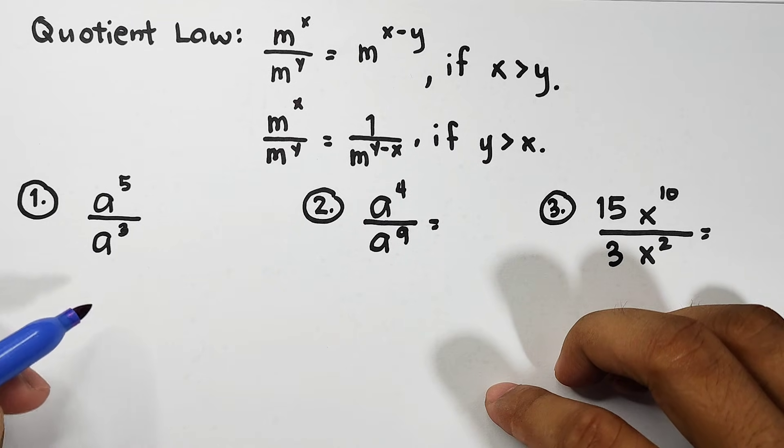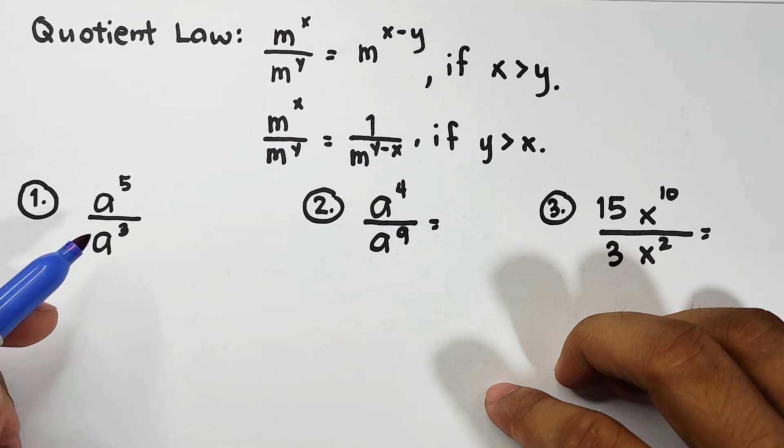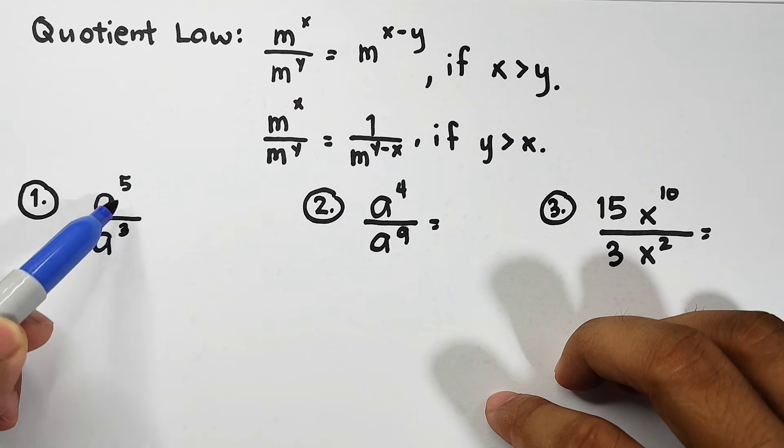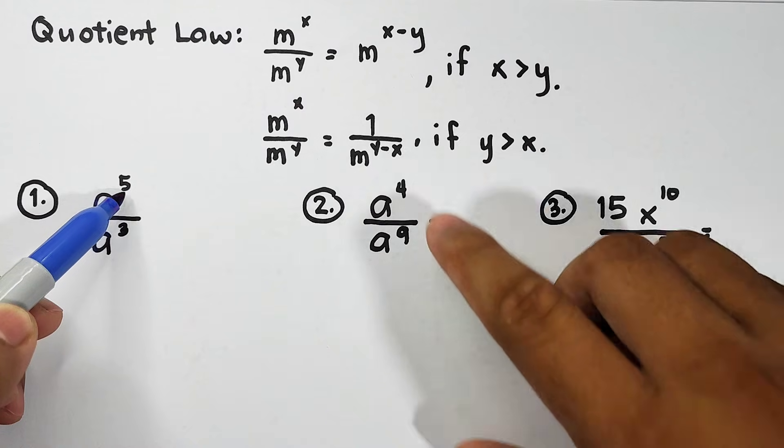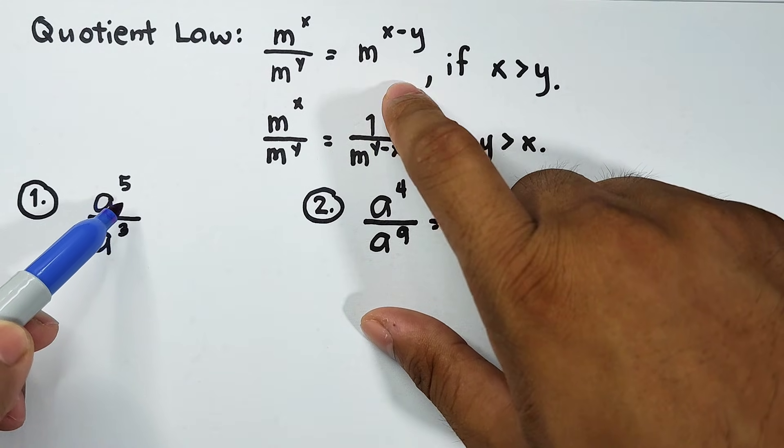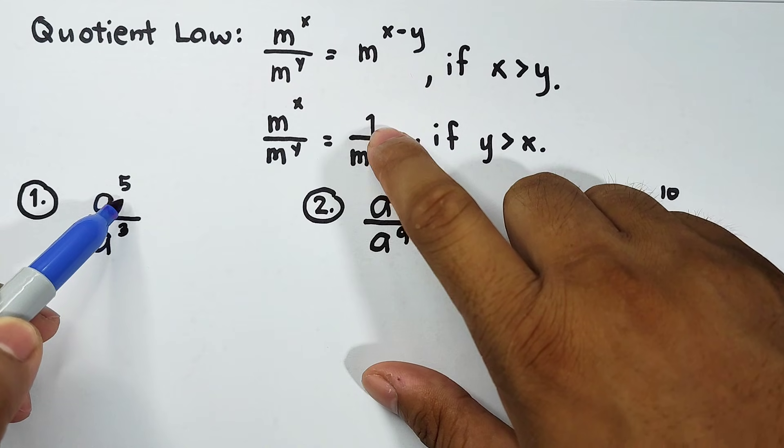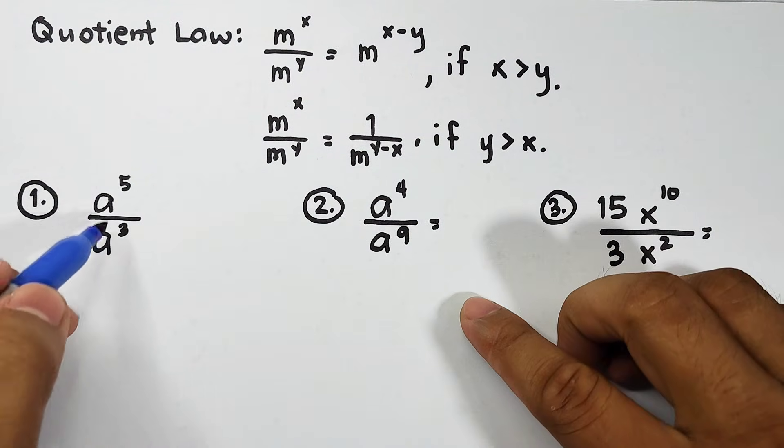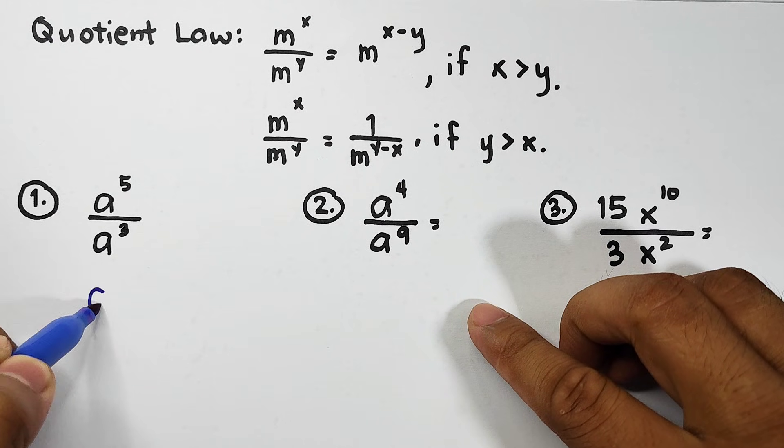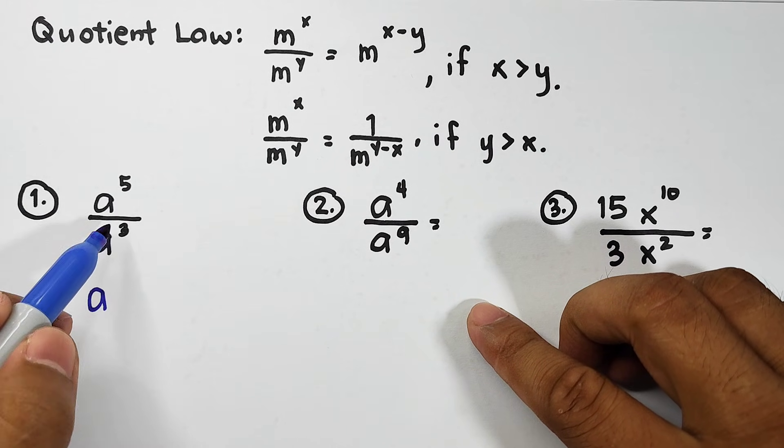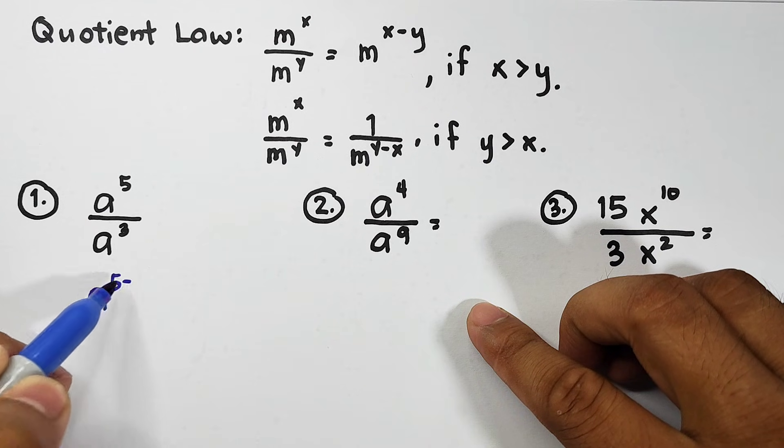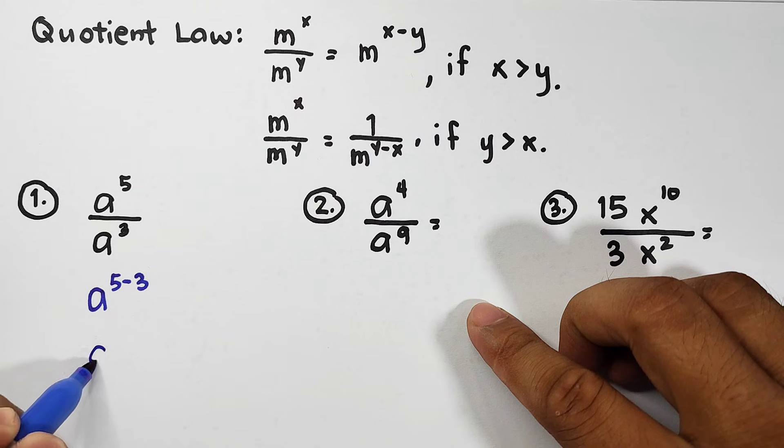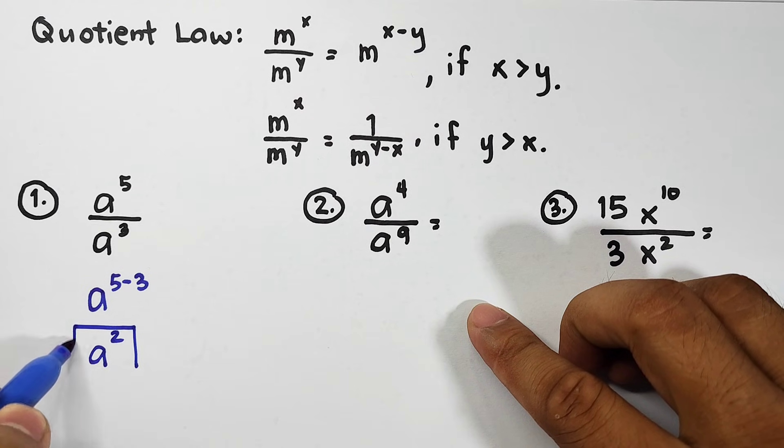For number 1, let us compare first the exponents. 5 versus 3. 5 is greater than 3, meaning we will use this pattern. Okay? Because the exponent of the numerator is greater than the exponent of the denominator. So, what we need to do is to copy the variable a. So, subtract the exponents. We will start with 5 minus 3. And simplifying this, this will give us a raised to 2 or a to the second power.